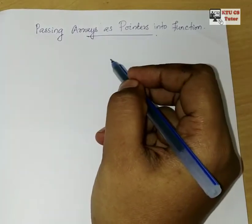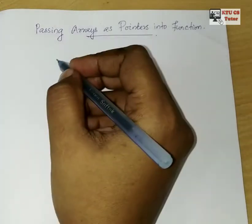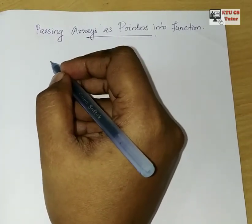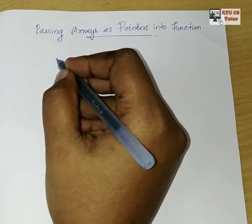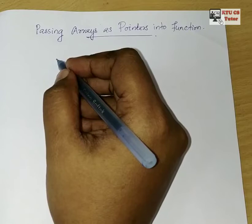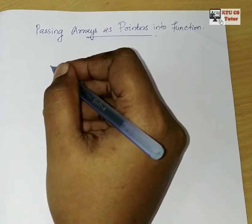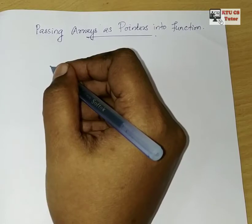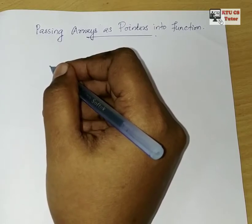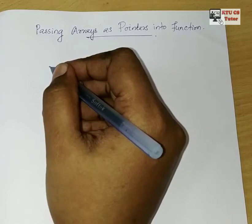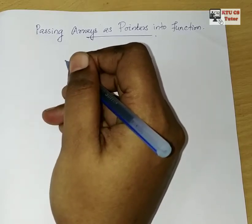We can pass pointers at a time. So I will just pass an array, one pointer at a time, and pass it to the display function. So I am going to write the main function. I will use an array and create the initialization, insert values, then use a display function to display the array elements by using a pointer.